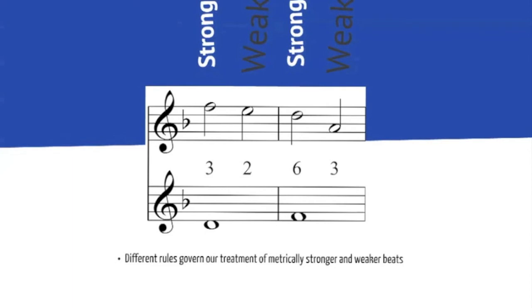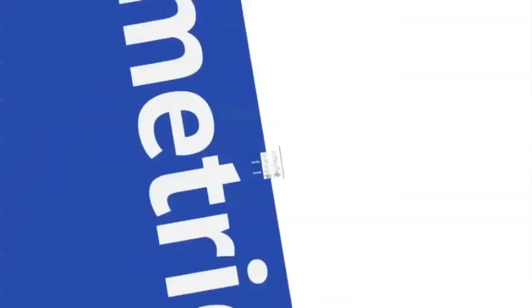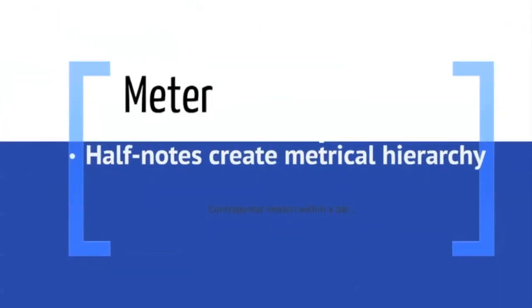So given that we have half notes against whole notes, the contrapuntal motion within each bar is going to be what? It is going to be oblique, of course.